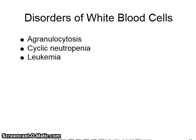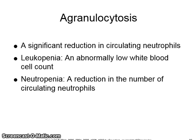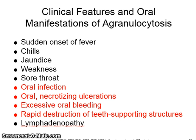Disorders of white blood cells include agranulocytosis, cyclic neutropenia, and leukemia. Agranulocytosis is a significant reduction in circulating neutrophils. Leukopenia is an abnormally low white blood cell count. Neutropenia is a reduction in the number of circulating neutrophils. Clinical features and oral manifestations include oral infections, oral necrotizing ulcerations, excessive oral bleeding, rapid destruction of teeth supporting structures, lymphadenopathy, jaundice, and fever.